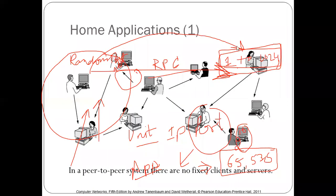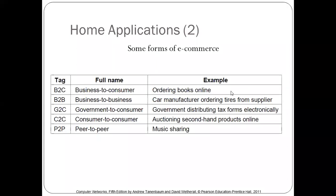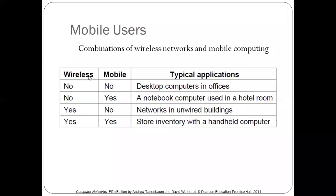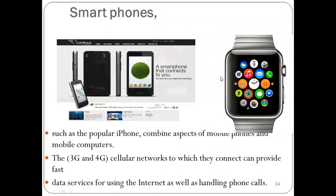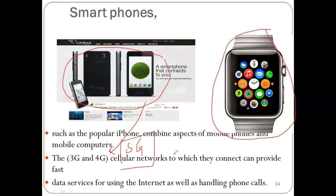We have also studied peer-to-peer, business-to-customer, customer-to-business, government models, and mobile users where we have wireless and mobility together. Moving further, devices are also connected in a network — even wearables like smart watches are connected with 3G and 4G. Now we are waiting for 5G, which is much faster — speeds up to Gbps.